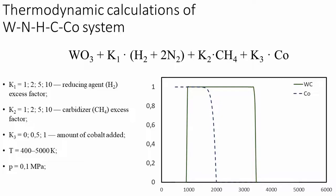The maximum yield of tungsten monocarbide is achieved with significant excess of the reducing agent over the stoichiometrically necessary. The full conversion of tungsten into tungsten carbide can be achieved in the temperature range of 800 to 3700 K depending on the excess of reducing agent and carbidizer. Cobalt was found to be present in the system as a condensing phase at a temperature below 2000 K.